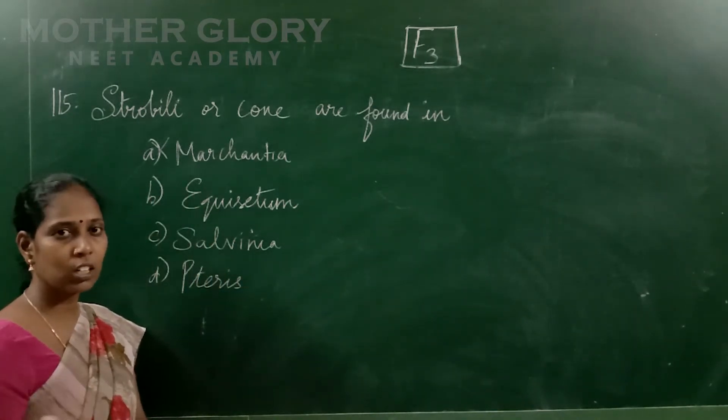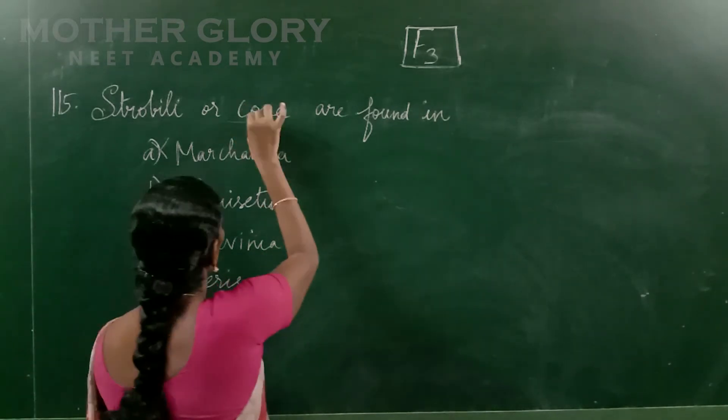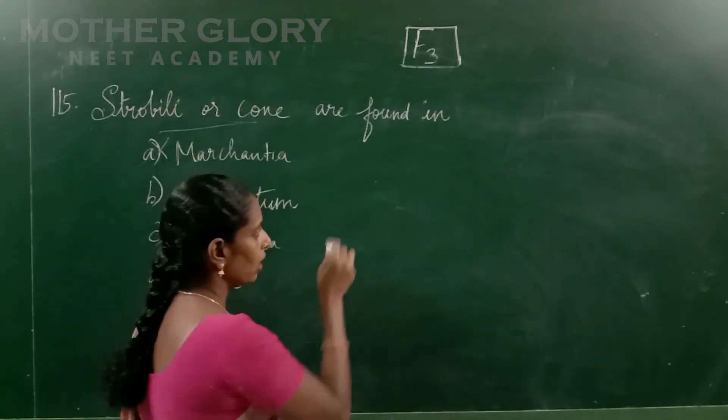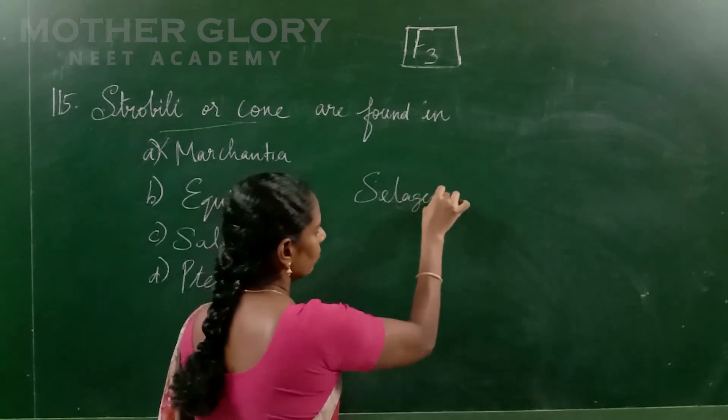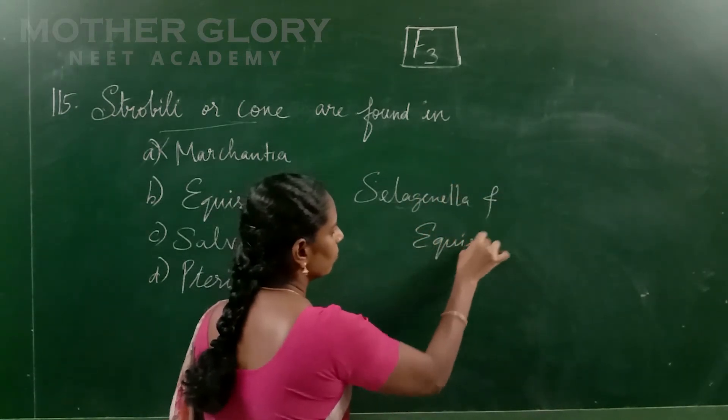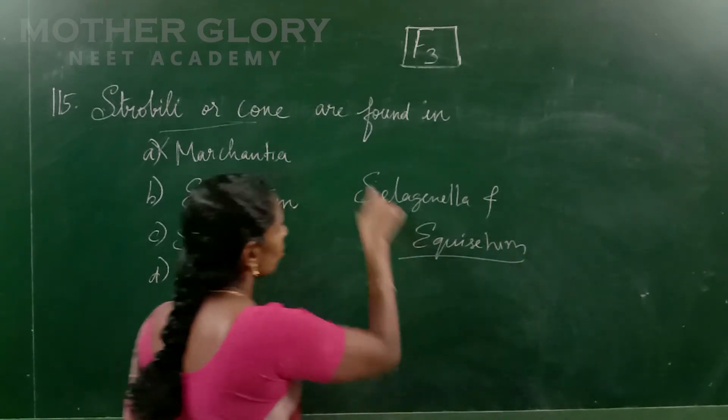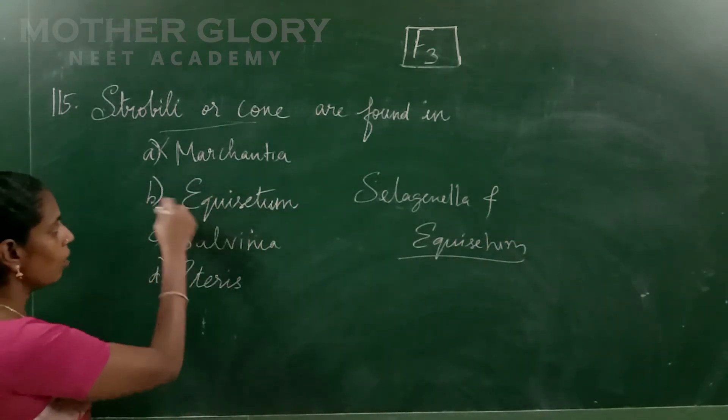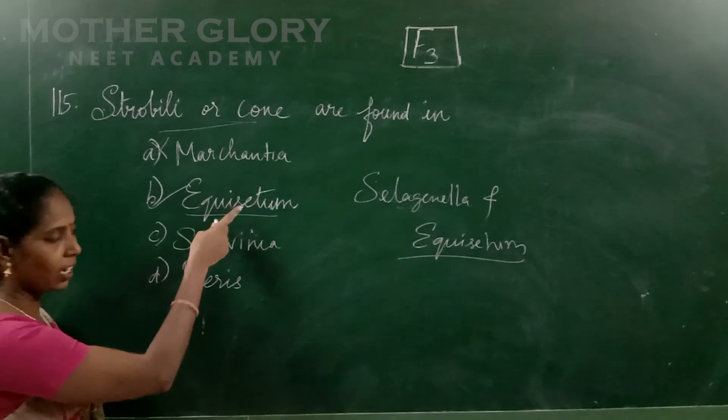One is Selaginella and another is Equisetum. So strobili does represent Selaginella and Equisetum, so strobili can be found. Option B will be equal to the correct answer.